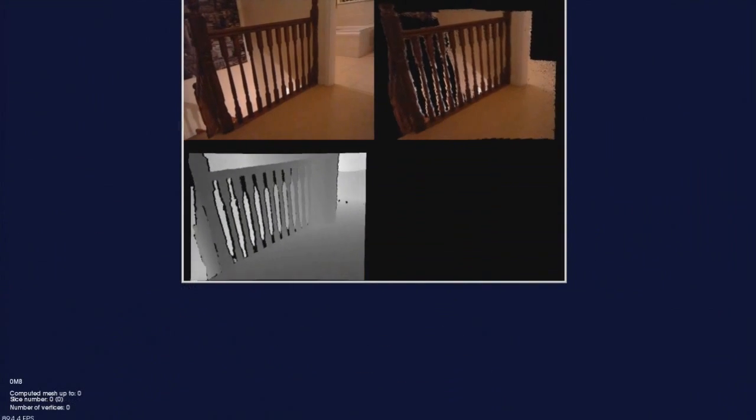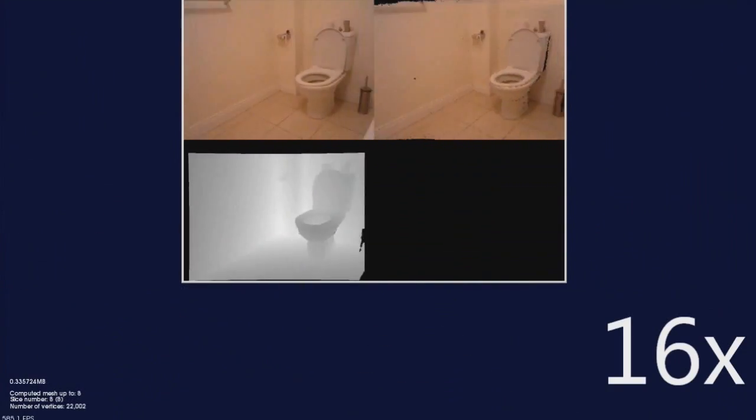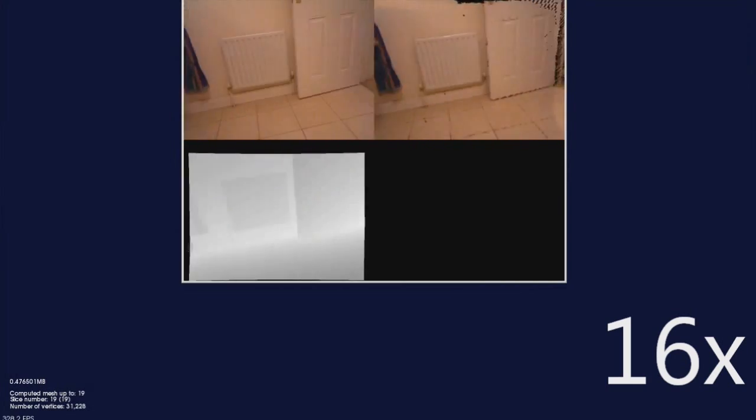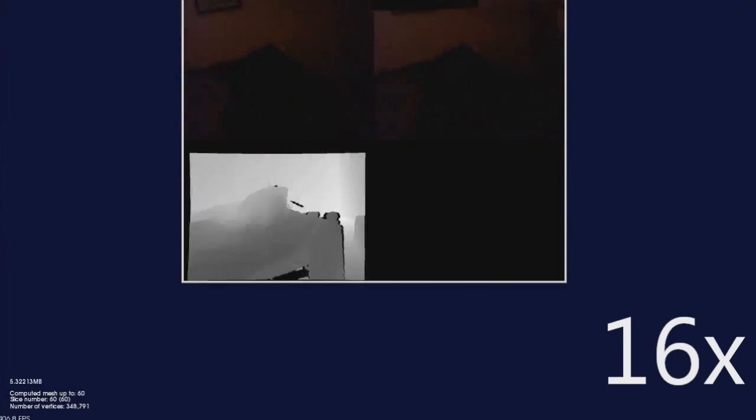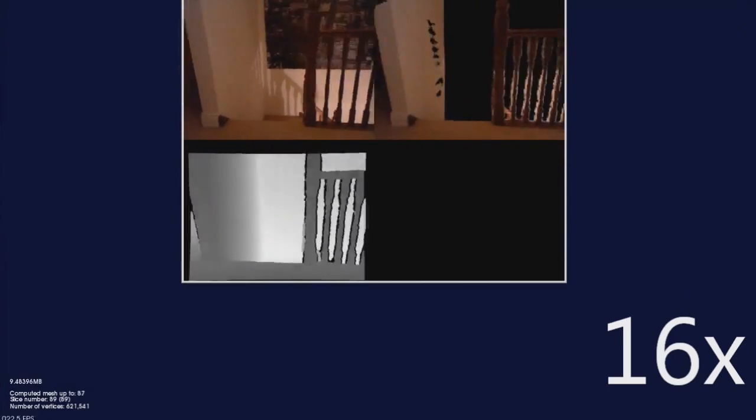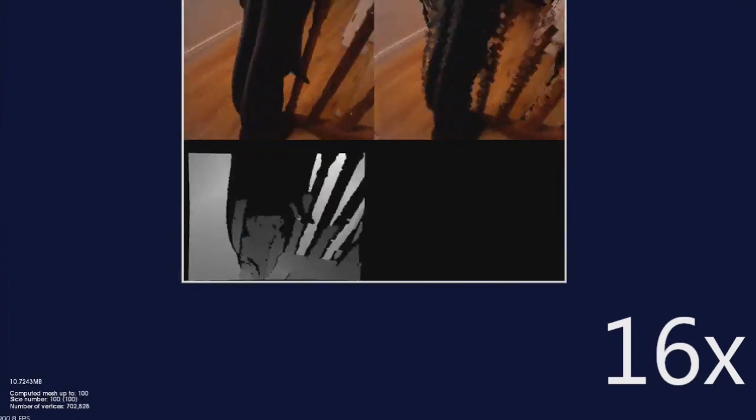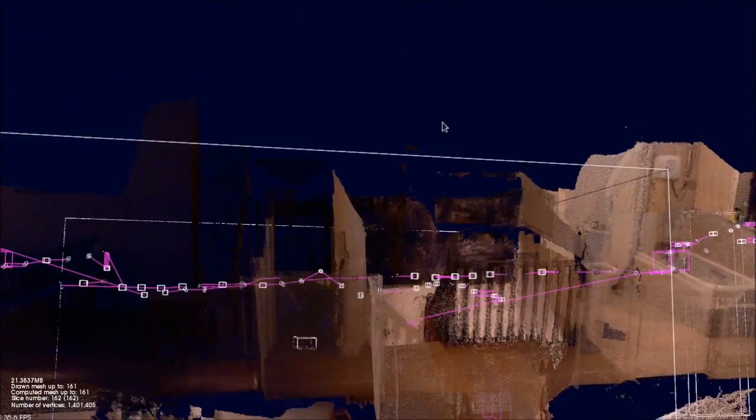In our final demonstration, we show how Continuous can be used to build a 3D color mesh model of a complete apartment. The sequence is captured using a handheld Kinect with full 6 degree of freedom motion. As can be seen, this includes moving between multiple rooms and descending a staircase.